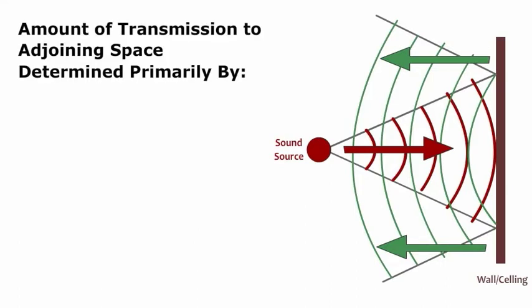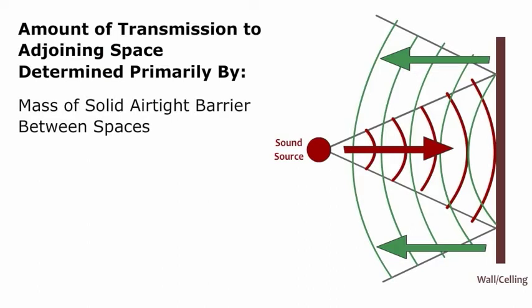The amount of transmission to an adjoining space is determined primarily by the mass of the solid, airtight barrier between the spaces, not by the surface treatment.